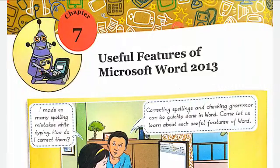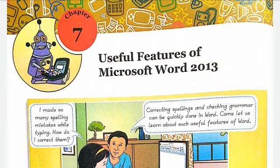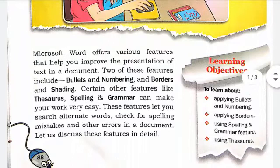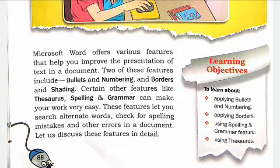Hello dear students. In this video we will start a new Chapter 7: Useful Features of Microsoft Word 2013. In this chapter we will discuss applying bullets and numbering, applying borders, using spelling and grammar features, and using the thesaurus. Microsoft Word offers various features that help you improve the presentation of text in a document.